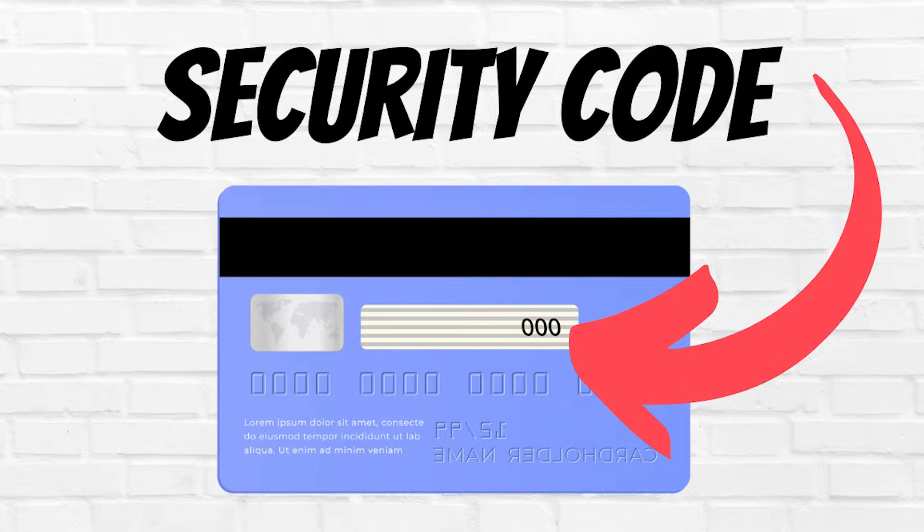Then it's going to give you that scanner screen, and you just hold your card underneath it, and it should get the numbers off of it. Double check that it got the numbers right, and then you're going to need to add the CVC number, that three-digit code from the back, and then you'll click Save.